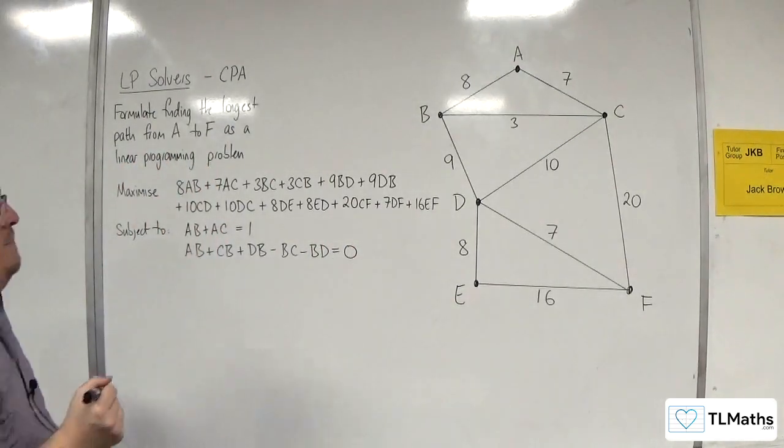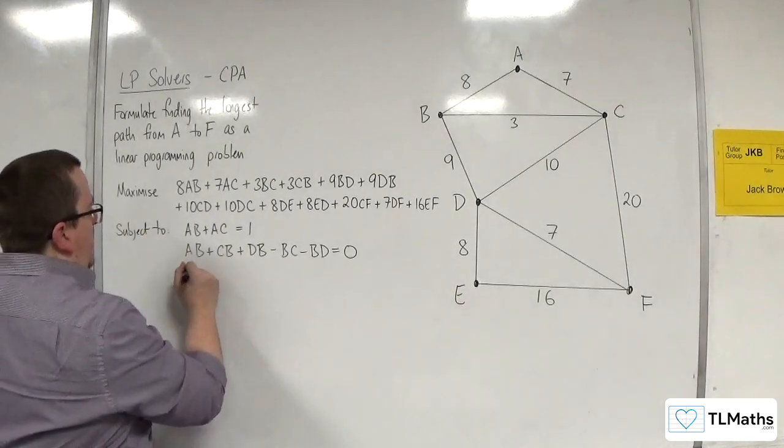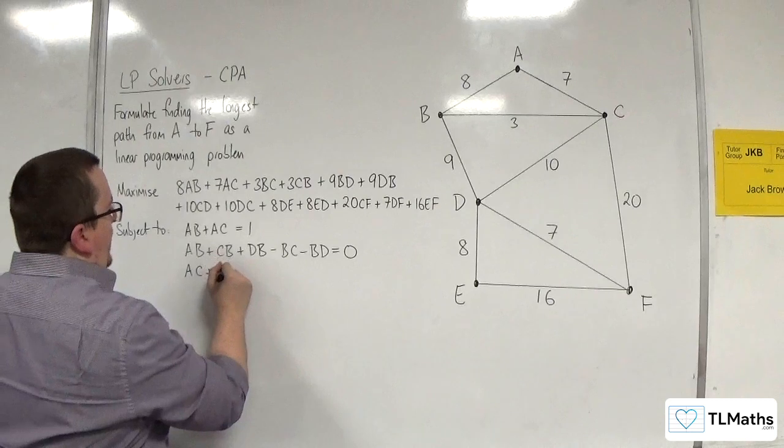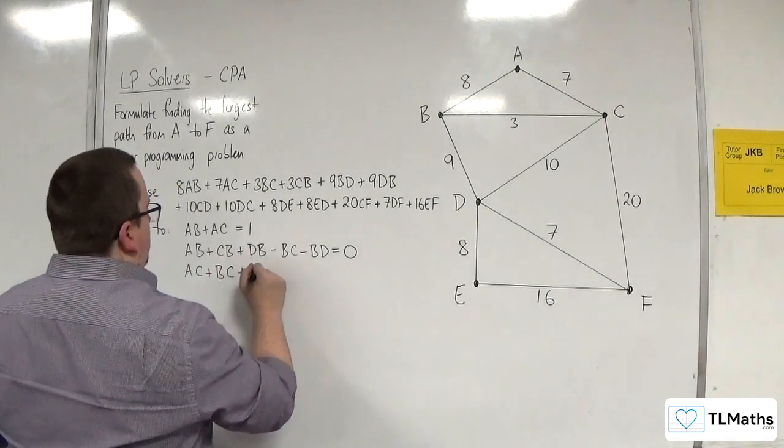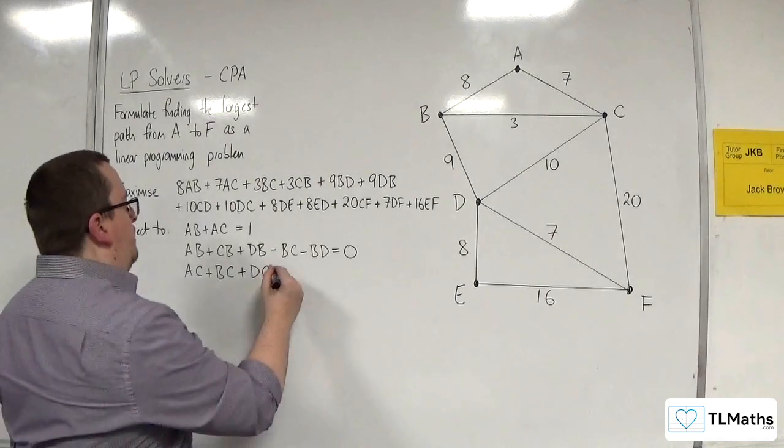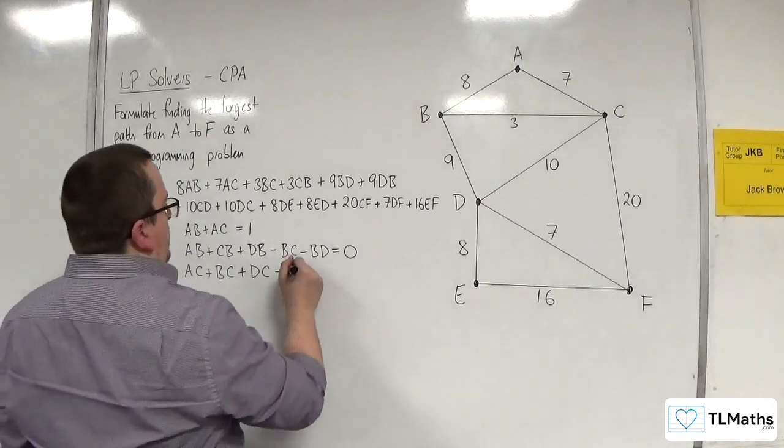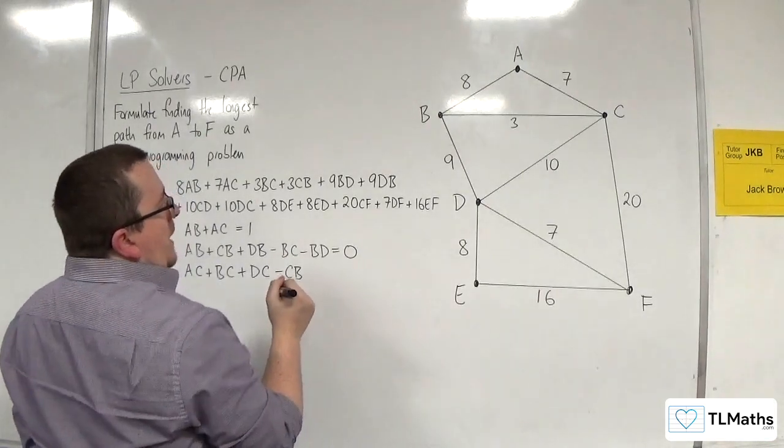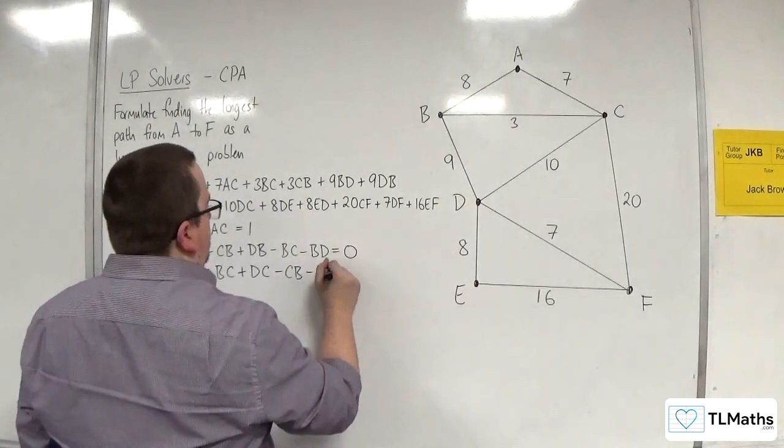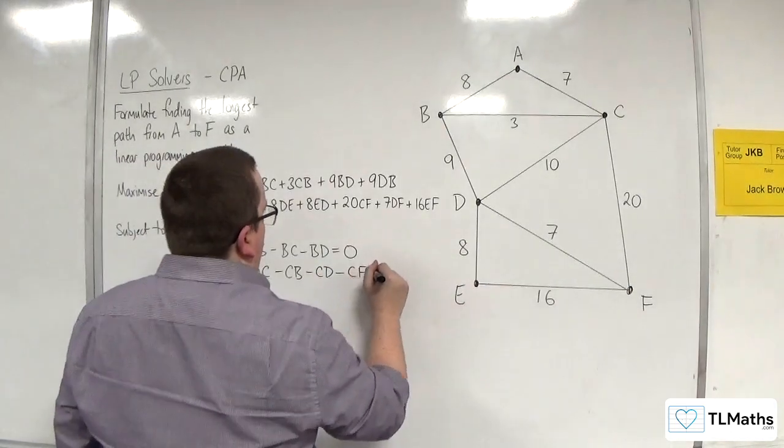For C, we've got AC going in, BC or DC, not FC because that's coming from the end vertex. Take away all the routes going out, which could be CB, CD, and CF, and that's going to be equal to 0.